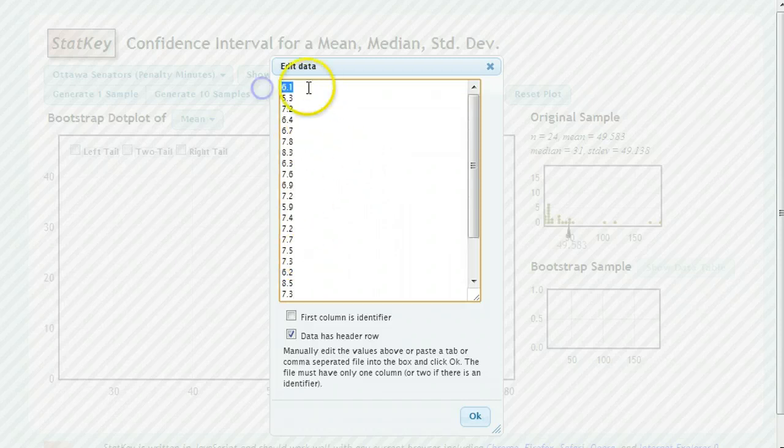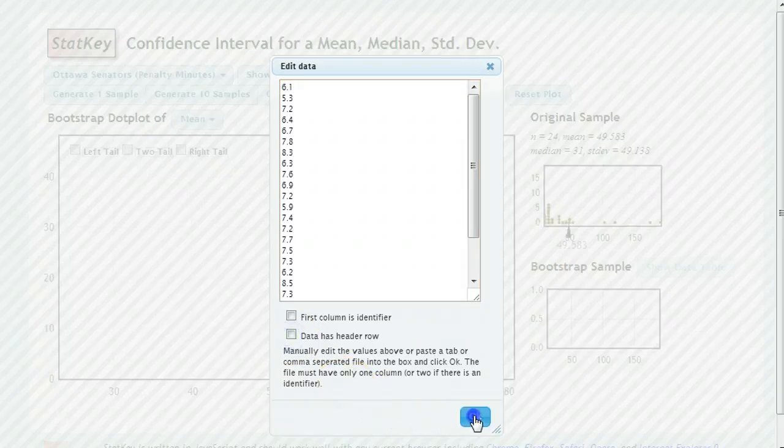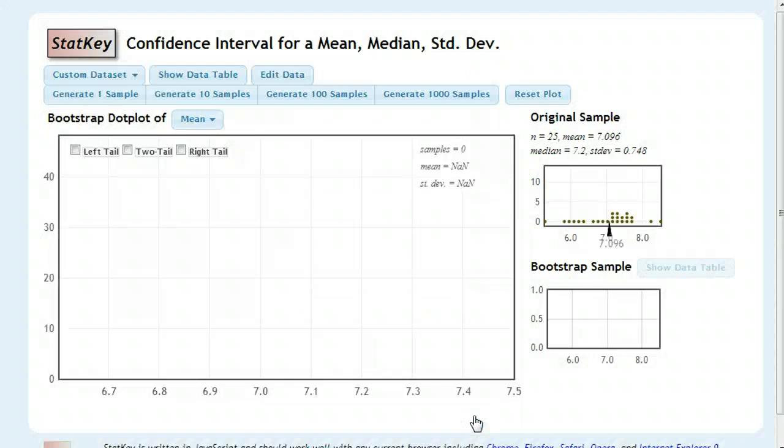Now if you leave your first row without a title up here, you need to make sure you uncheck the Data Has Header Row. Because what that will do is it will ignore your first piece of data, and you don't want it to ignore your data. So I unchecked that because I didn't have anything typed in, and I clicked OK.